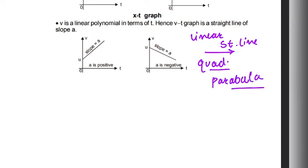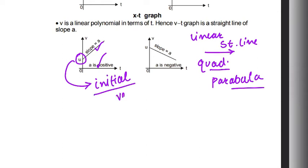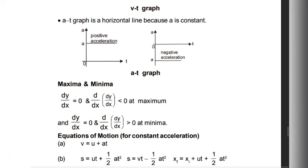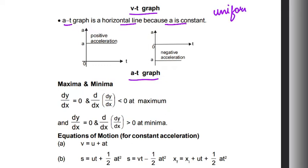The v-t graph will be positive with u as the initial velocity marked on it — remember, the examiner may try to confuse you, so always focus on the initial velocity. Then we have the v-t graph and the a-t graph. The a-t graph will be a horizontal straight line because acceleration is constant in uniformly accelerated motion.